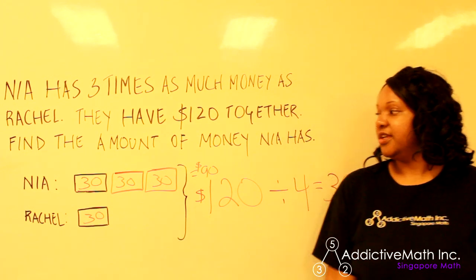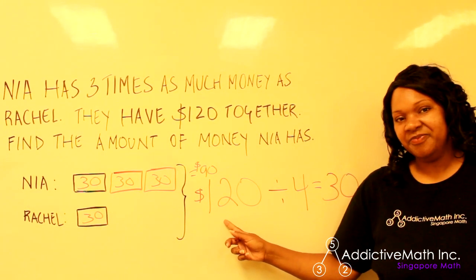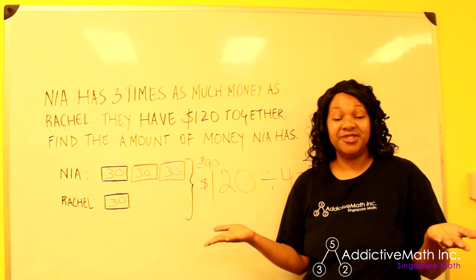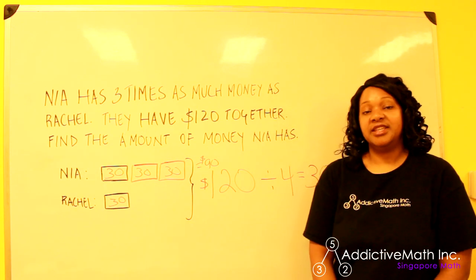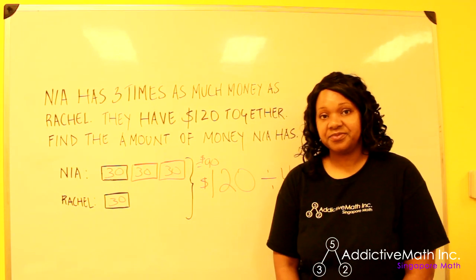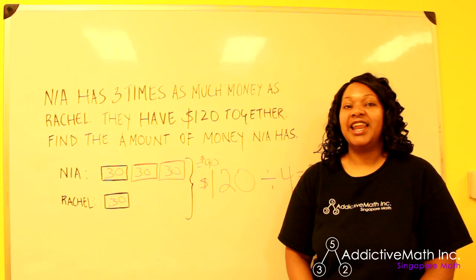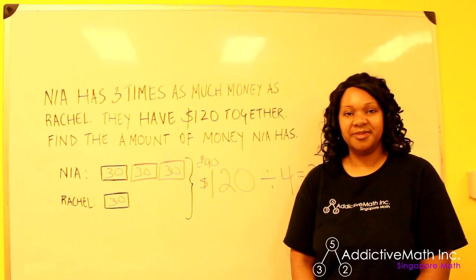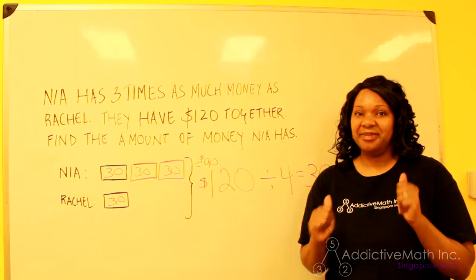Let's go back and check our answer: $90 is three times the amount of $30, and if you add 90 and 30 together you still get $120. I want to thank you for watching — I'm so glad you joined me. I like to leave you with some motivation, so repeat after me: 'I am bold, I am confident, and I can solve any math problem that comes my way.' Thanks for watching — I'll see you on the next Math Monday!